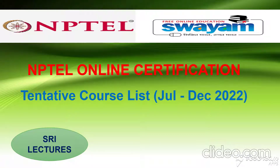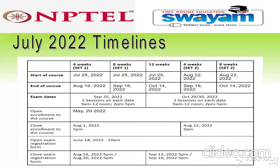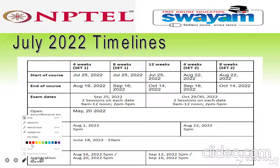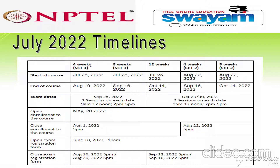For the July 2022 timeline, four-week and eight-week courses are divided into two sets: Set 1 and Set 2. Eight-week courses also have Set 1 and Set 2. Set 1 courses start from July 25th, and eight-week Set 1 also starts from July 25th.